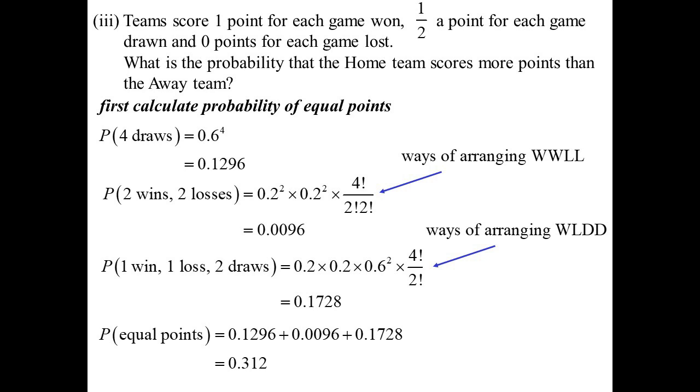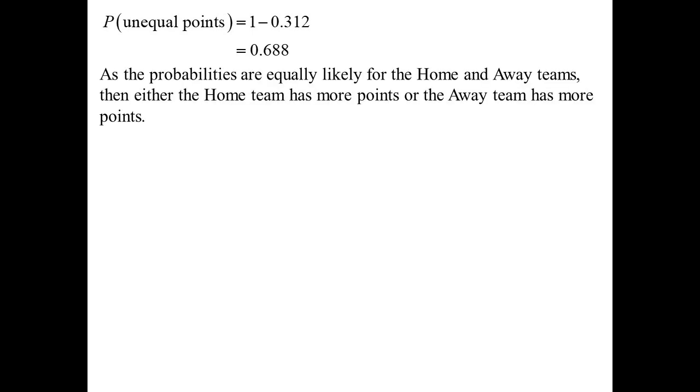Now you might be thinking, why do that when the question actually is, what's the probability that the home team scores more? And I've just worked out that they get the same. Well, here's why. Well, I've just worked out the probability the points are the same. So therefore, the probability the points are different, if I take that away from 1, 0.688. So that's the probability that we have unequal points. But go back to what they said. The probability of the home team winning was 0.2. The probability of the away team winning was 0.2. Equally likely. So if they're equally likely, then these unequal points, half of those must be when the home team wins. Half of them must be when the away team wins. I just got to halve what I've just found. And we get 0.344.